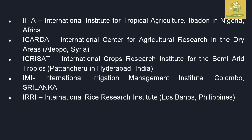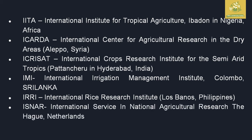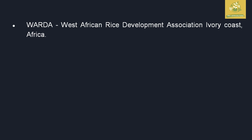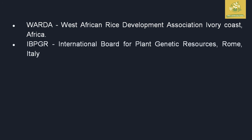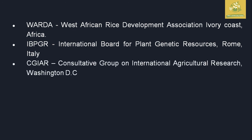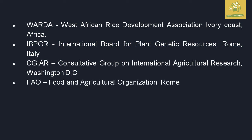IRRI (International Rice Research Institute) is situated at Los Baños, Philippines. ISNAR (International Service for National Agricultural Research) is in The Hague, Netherlands. WARDA (West Africa Rice Development Association) is in Ivory Coast, Africa. IBPGR (International Board for Plant Genetic Resources) is in Rome, Italy — notable for storing more than lakhs of plant genetic resource species. CGIAR (Consultative Group on International Agricultural Research) is in Washington DC. FAO (Food and Agriculture Organization) is in Rome.